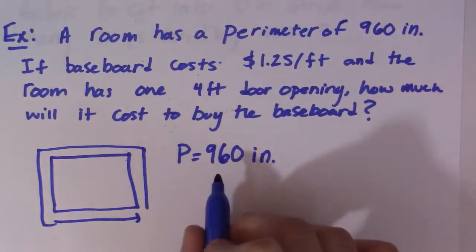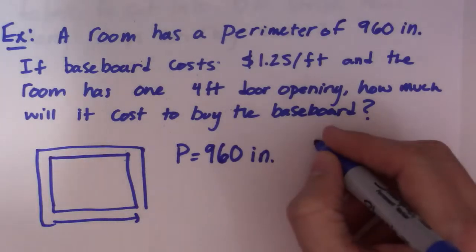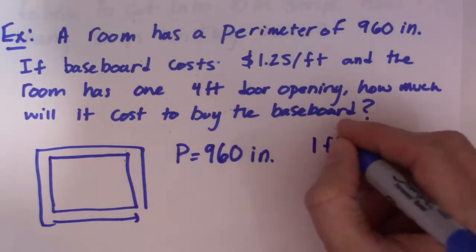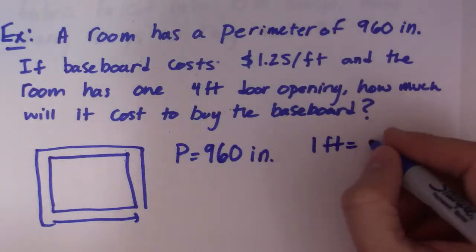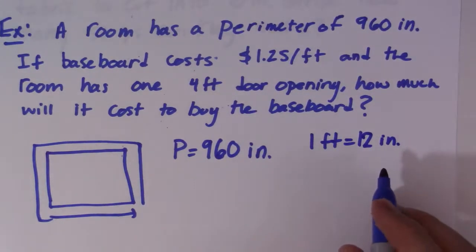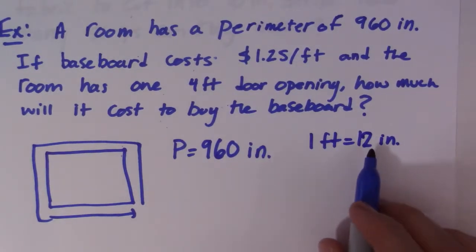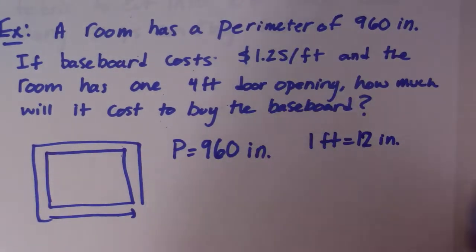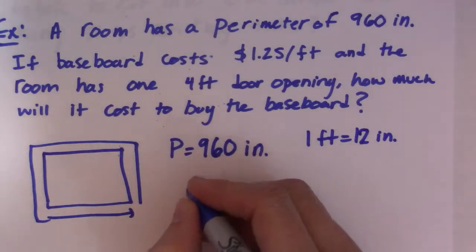So what we need to do first is change this to feet. We need to know the conversion - that 1 foot is equal to 12 inches. I'm going to use proportionality. You might be able to just think about this, especially with inches and feet, but I like to use a proportion because it works every single time. So we want an answer in feet.